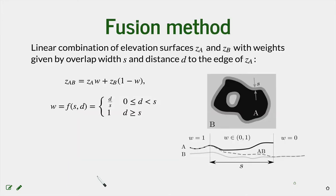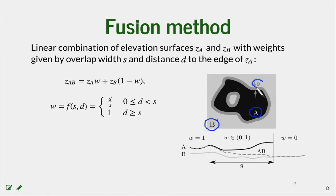Here is the mathematical formulation of this fusion method. We have the UAS-based digital elevation model (A) and the LiDAR-based digital elevation model (B) that we are trying to update with the new UAS data. We then define an overlap area with width S, and within this area we average the elevation between A and B with smoothly changing weight.